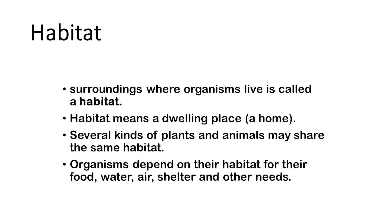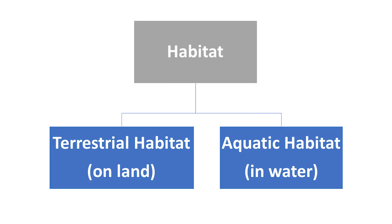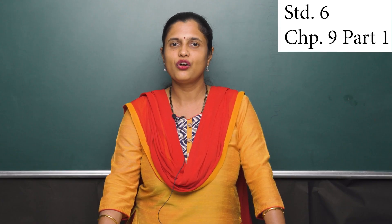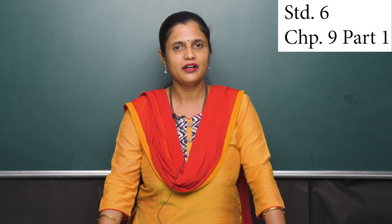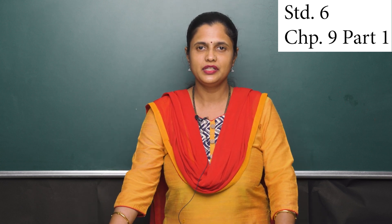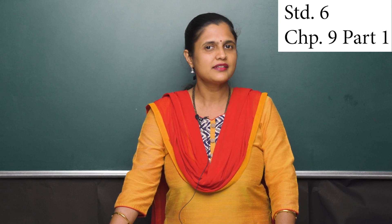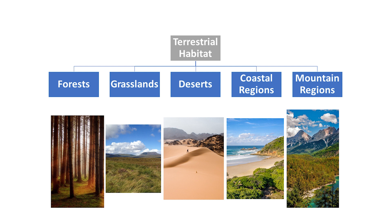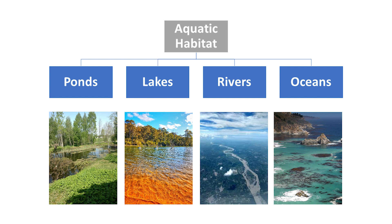The surroundings in which an organism lives is called its habitat. Habitats are of two types: terrestrial habitat and aquatic habitat. The habitats of plants and animals that live on land are called terrestrial habitats. The word 'terra' in Latin means land or earth, and the word 'aqua' in Latin means water. So the habitats of plants and animals that live in water are called aquatic habitats. Some examples of terrestrial habitats are forests, grasslands, coastal regions, and mountain regions. And some examples of aquatic habitats are ponds, rivers, lakes, and oceans.